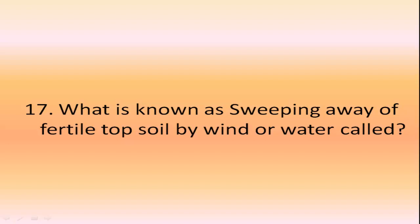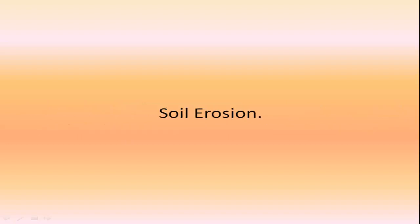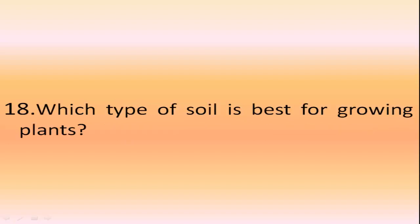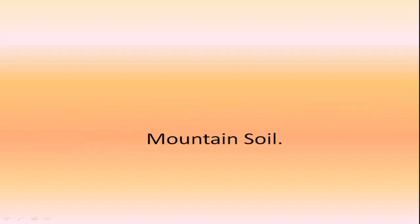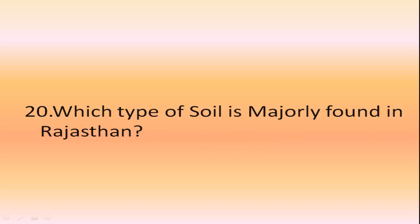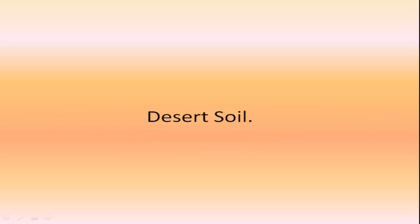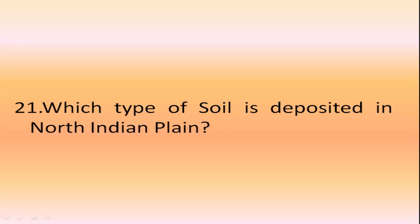Which soil is developed under tropical and subtropical climate with alternate wet and dry seasons? Laterite soil. What is known as the sweeping away of top fertile soil by wind or water? Soil erosion. Which type of soil is best for growing plants? Loam soil. Which type of soil is found on slopes of mountains and hills covered with forest? Mountain soil.